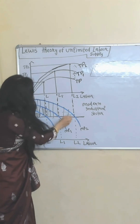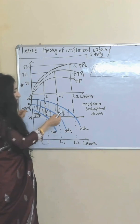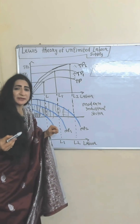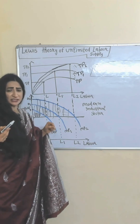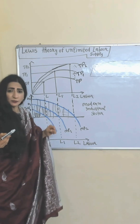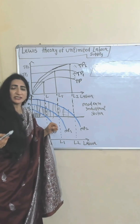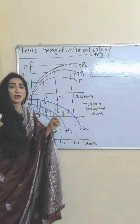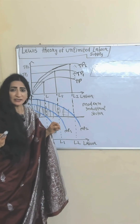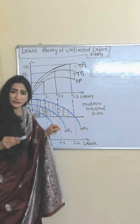They are paying wages equal to OW, but the marginal product of labor is now equal to OD2. This whole part is called the profit of the modern industrial sector. With this profit they accumulate capital, and as capital accumulation increases, investment, output, employment, and income also increase, and eventually the economy grows.